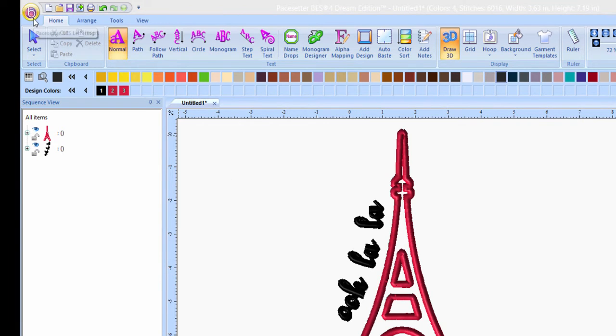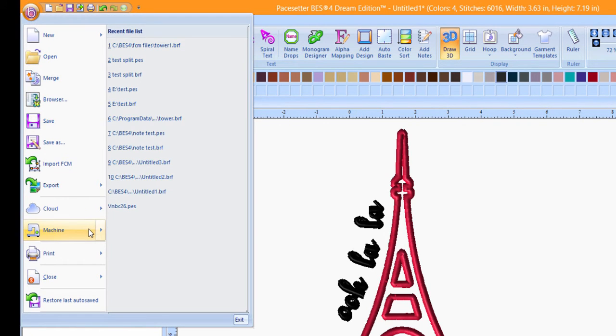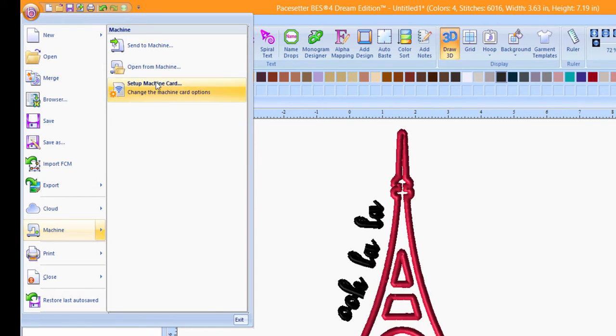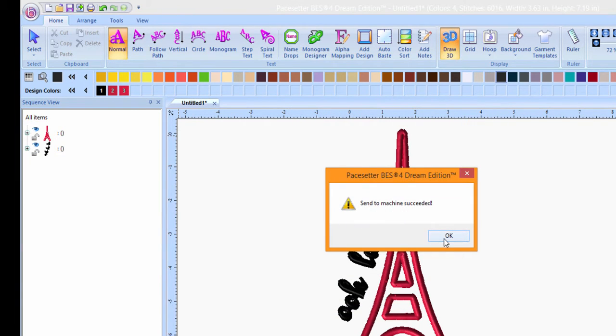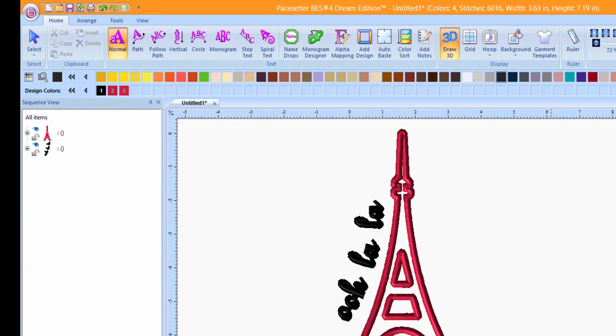Go to the Paste Setter pull down menu and choose Machine and then Send to Machine. Name the file and press Send. Press OK. The file will be waiting on your flash card at your embroidery machine.